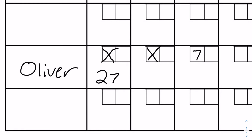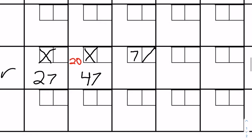Moving on to the second frame — remember a strike counts the next two balls. You have the 10 from the initial strike, then a seven in the next frame, and then Oliver gets a spare which totals 10, making 20 points for that frame and a running total of 47. On the next frame he throws an eight. Because the previous frame was a spare, you add that extra ball: the spare frame scores 18, putting Oliver at 65.